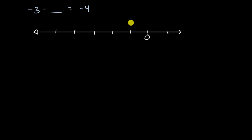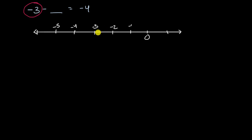So this is negative one, negative two, negative three, negative four, and negative five. Let's start at negative three — that point on the number line. And I want to end up at negative four — that point on the number line. So to go from negative three to negative four, I have to go one step in the leftward direction.